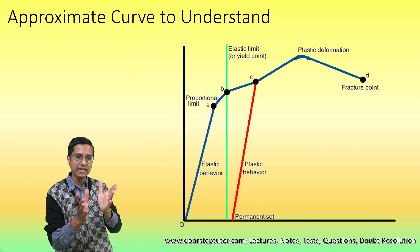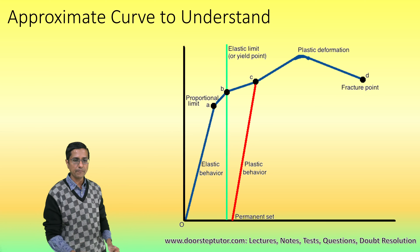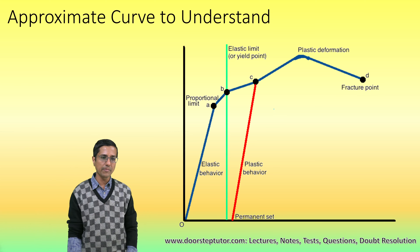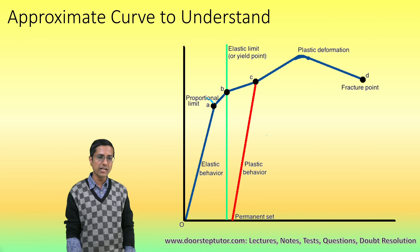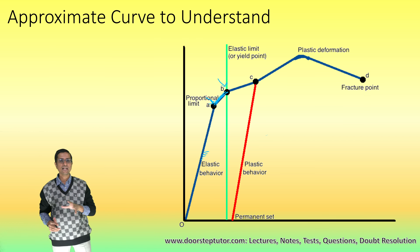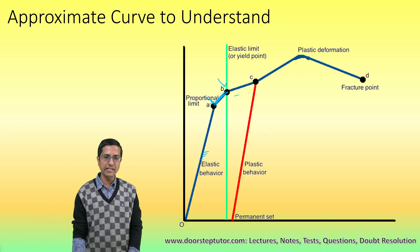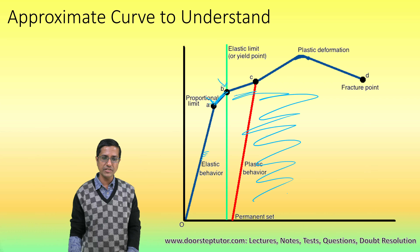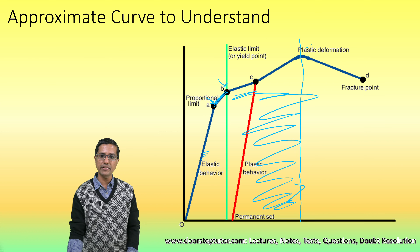Looking at the simple diagram: the proportional limit is where stress and strain are proportional. Between A and B the material is still elastic. After point B is the elastic limit, after which the material has become plastic — this region is the plastic region. After that point, the material will start developing a neck and there is failure.